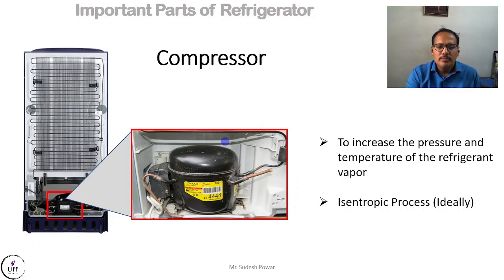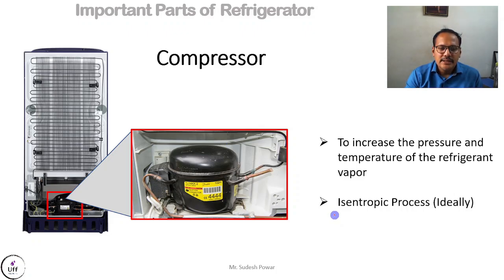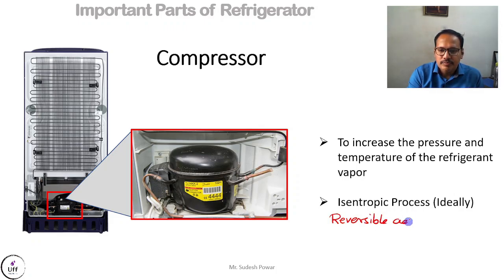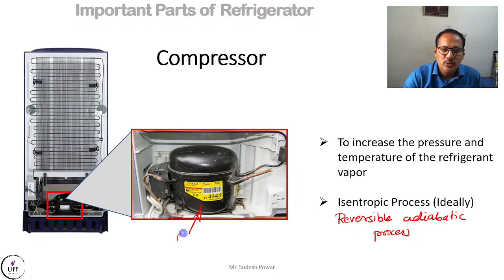The function of the compressor is to increase the pressure of the refrigerant vapor. Because of increasing pressure, its temperature also increases. Ideally, this process is an isentropic process, meaning entropy of the refrigerant is constant. Isentropic process is also known as reversible adiabatic process, meaning there is no heat interaction during this process.